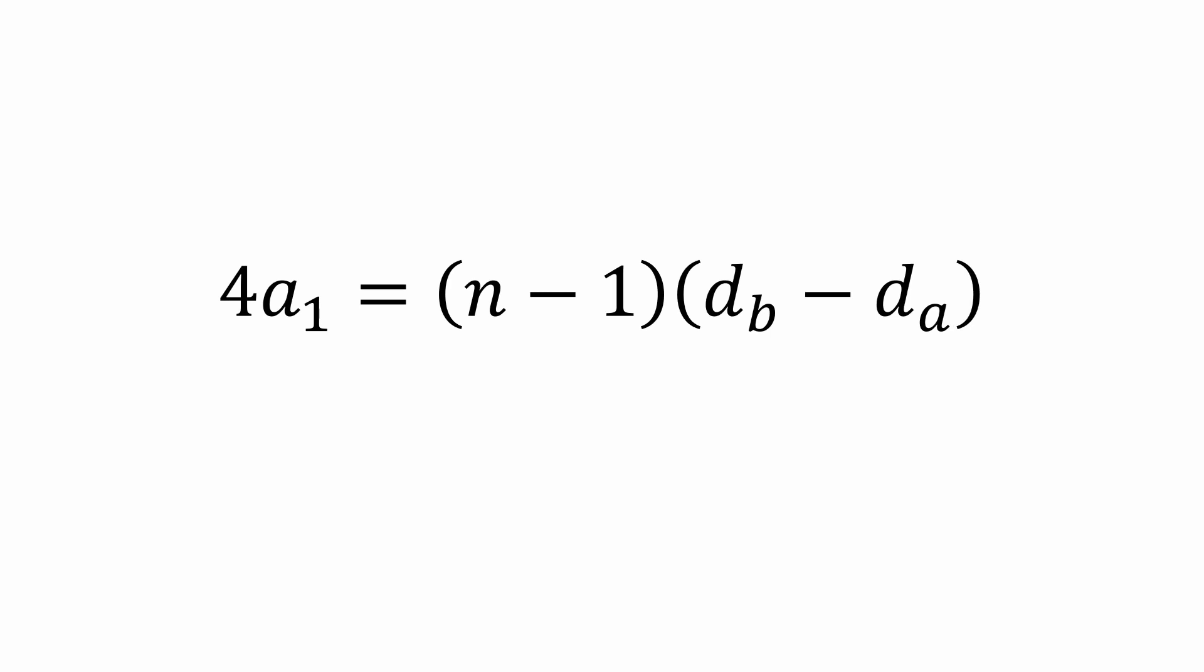And since Bob and Alice are writing down sequences with 2021 terms, we'll replace n with 2021. Dividing both sides by 4 leaves us with the following expression for A1.